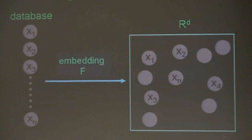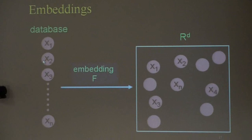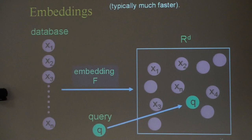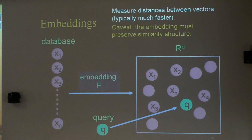The method I'll talk about is a special case of the embedding family. The idea is that you start with your database objects and come up with a function f that maps every object to a d-dimensional vector. Once you have this mapping, you also map your query into this d-dimensional space, and instead of measuring distances in the original space — which is computationally expensive — you measure distances in the embedding space, which is much faster. This gives a big gain in efficiency, but the caveat is that the embedding must preserve the similarity structure of the original space, so the nearest neighbors in the embedding should be closely related to the nearest neighbors in the original space.